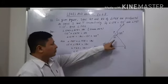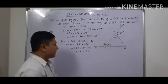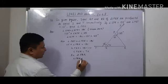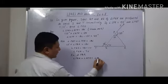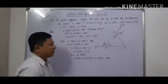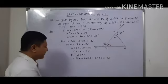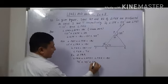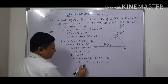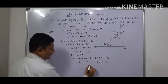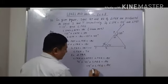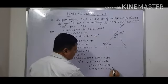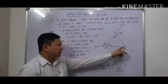Now we use the property that the sum of all angles of a triangle is 180 degrees. Taking triangle PQR: angle PQR plus angle QPR plus angle PRQ is equal to 180 degrees. Angle PQR is 70 degrees and angle QPR is 45 degrees, so 70 plus 45 equals 115, plus angle PRQ equals 180. Therefore angle PRQ is equal to 180 minus 115, which is 65 degrees.